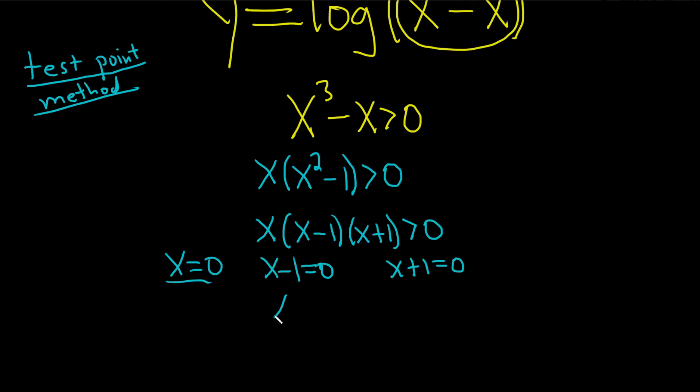So we have zero, here we have one, and then here we have negative one. Oh, this is interesting. Okay. So now, hence the name test point method, we're going to pick test points. So you take each of these numbers and you plot them on a number line. So here's negative one, here is zero, and here is one.